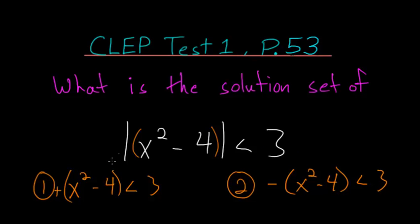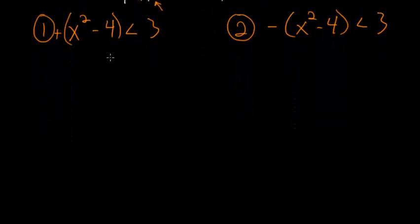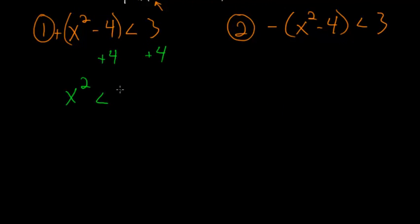The only tricky part with this problem is that we have an x squared here, but we'll come to this point once we solve each of the two cases. Looking at Case 1, we add 4 to each side so that we have x squared is less than 7.